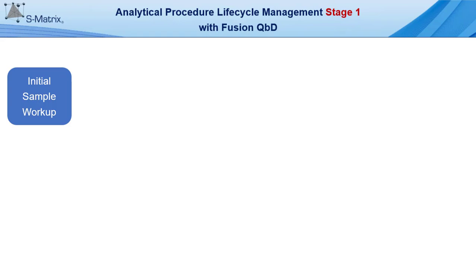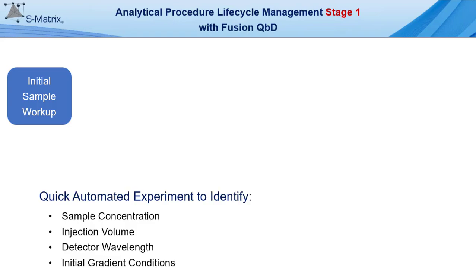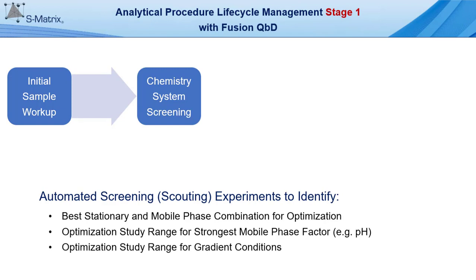Fusion QBD supports all phases of stage one, from initial sample workup to quickly identify the right sample concentration, injection volume, detector wavelength, and initial gradient conditions for method development. The initial sample workup leads into chemistry system screening, which with Fusion QBD automation enables rapid identification of the best stationary and mobile phase combination for optimization, the optimization study range for the strongest mobile phase factor or factors — for example, pH in a reverse phase method — and the optimization study range for the gradient conditions.